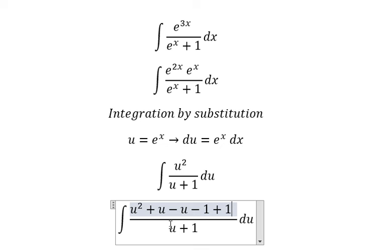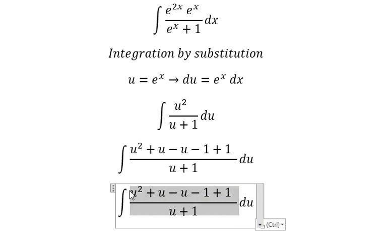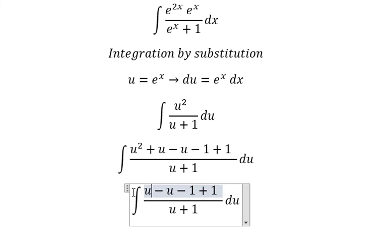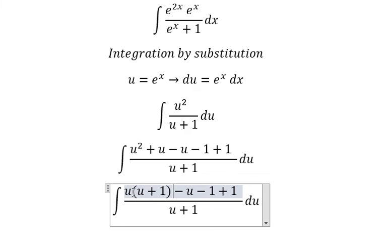This one we can do factorization in here and you will have u multiplied by u plus one, negative u and negative negative number one. We can do another factorization.